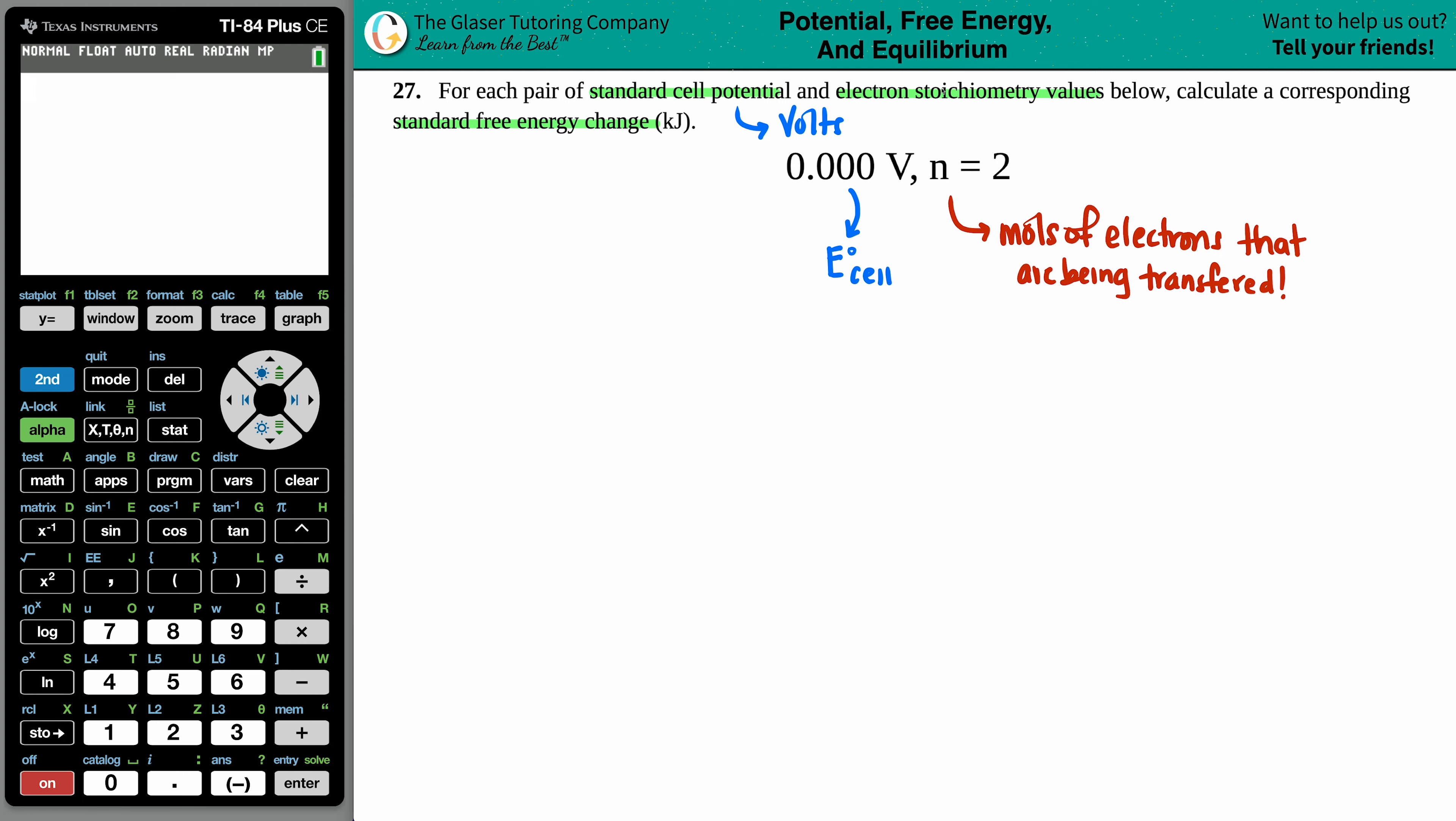All right. So now what formula links these pieces of information together? I need an E cell. I have an n value and they want the standard free energy change. Free energy is always that G, right? And it's that change. So we're looking for a ΔG° standard means that I'm throwing in that notch there.